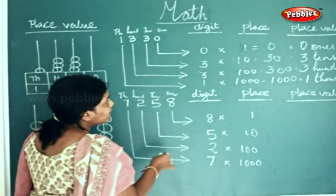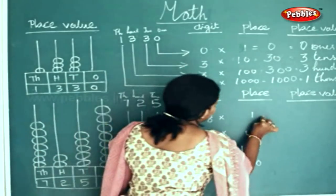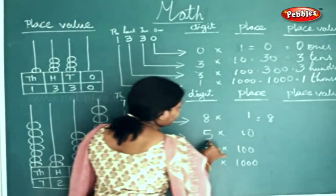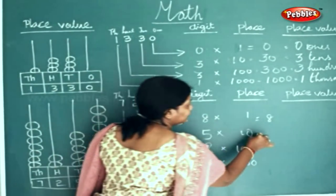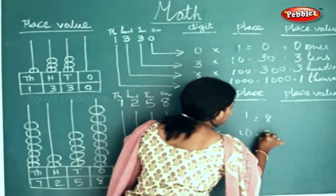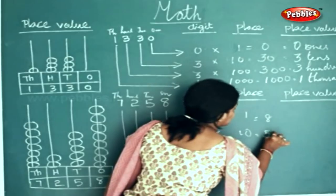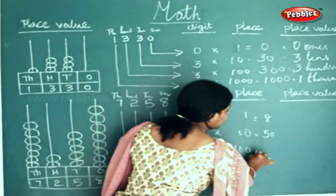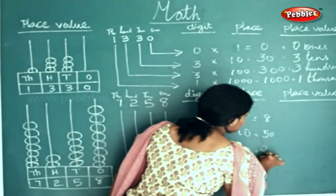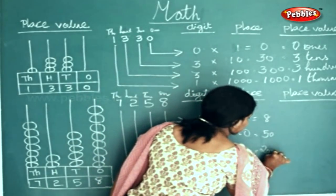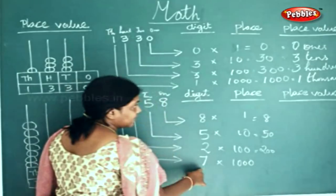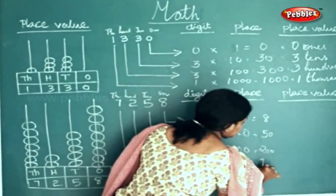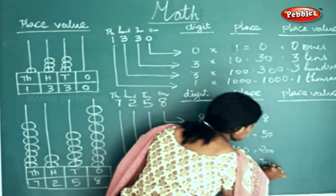Eight into one will be eight. Five into ten will be 50. Two into hundred will be 200. And seven into thousand will be 7000.